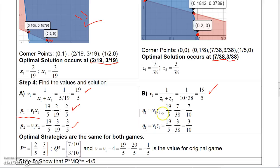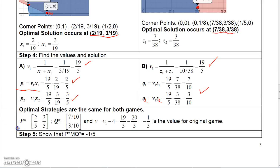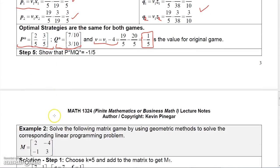To get the Q values, Q1 would be V1 Z1, and then Q2 is V1 Z2. So I take 19 5ths times 7 38ths, and that's 7 10ths, and 19 5ths times 3 38ths is 3 10ths. So there's the Q values, and now the strategy would be P star is 2 5ths, 3 5ths, Q star is 7 10ths, 3 10ths, V is V1 minus 4. Remember, we added 4, so we've got to take it away. So 19 5ths minus 4 would be 19 5ths minus 20 5ths, which is negative 1 5th, and that's the value for the original game. I'll leave you to show that P star times M times Q star is negative 1 5th, but that's how you would check it.